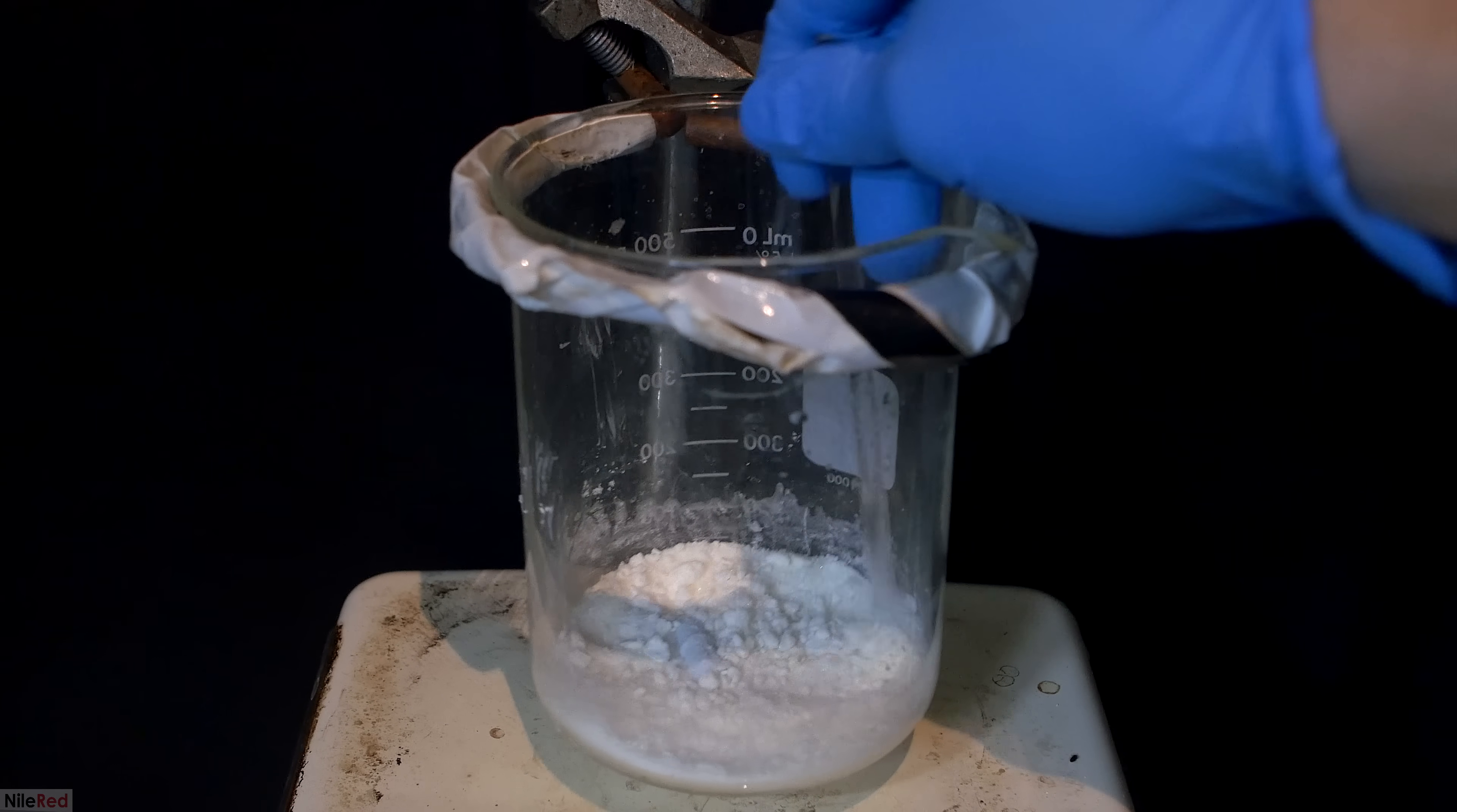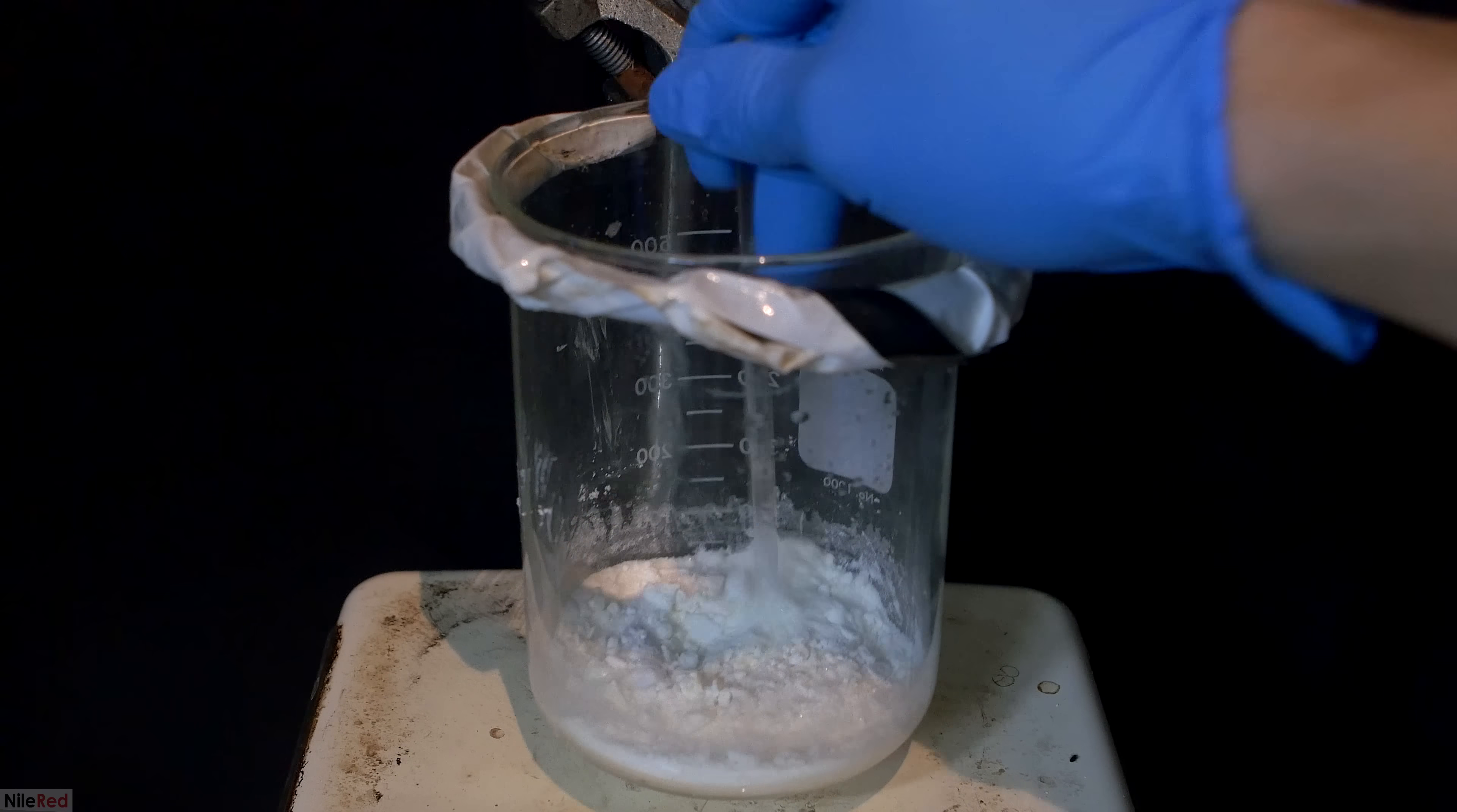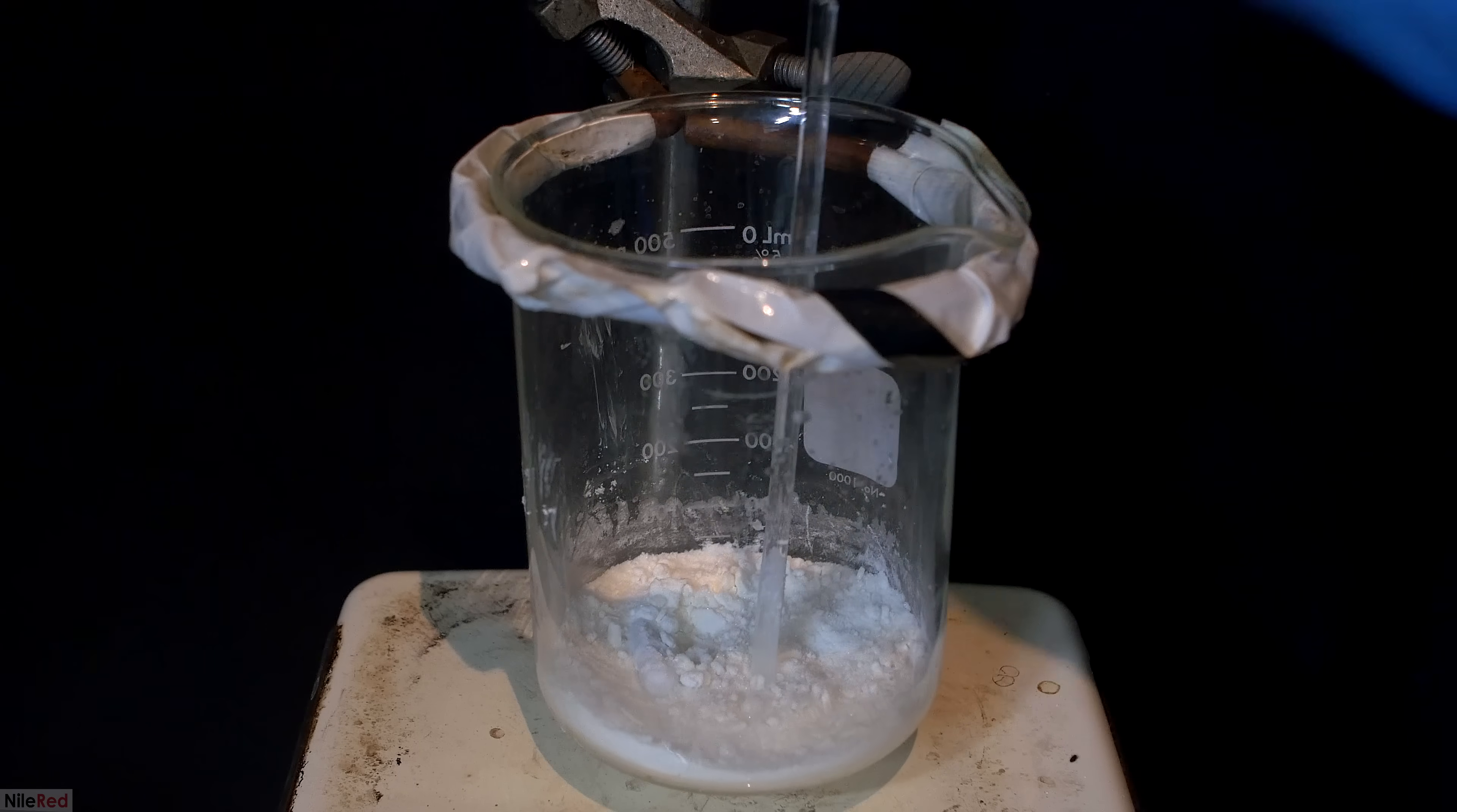Anyway, with that warning in place, we can move on to the introduction. Mercuric chloride, or mercury(II) chloride, is an extremely toxic, colorless, and odorless salt of mercury.